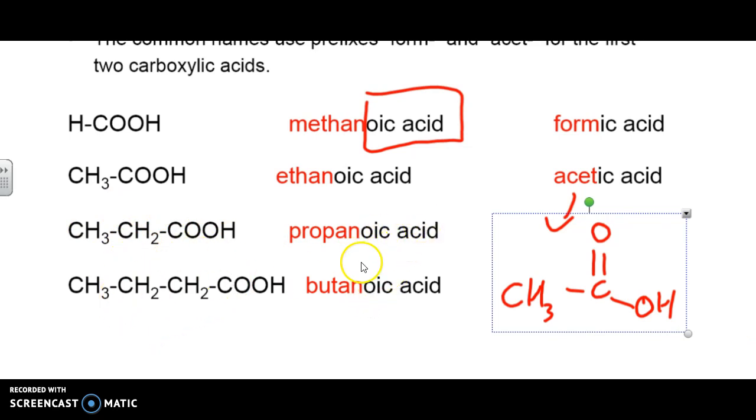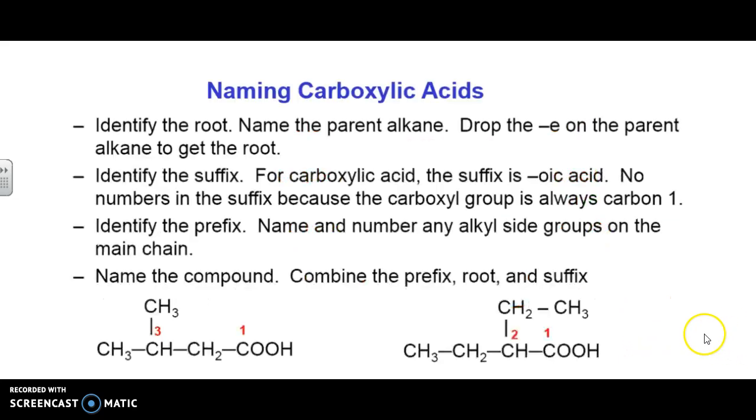You'll notice that there's no numbers here. The reason why is, by definition, a carboxylic acid has to go on the end. So if it has to go on the end, by definition, that's spot one. When we're naming it, it's the same rules as always, where you name the parent alkane. Instead of having the e on the end, you're going to put the suffix oic acid. By definition, that carbon there is carbon number one.